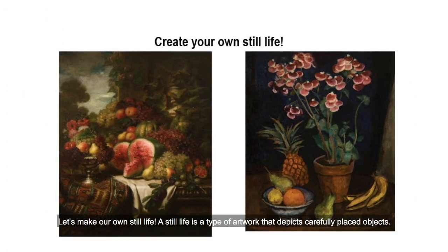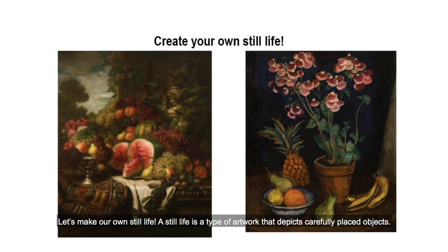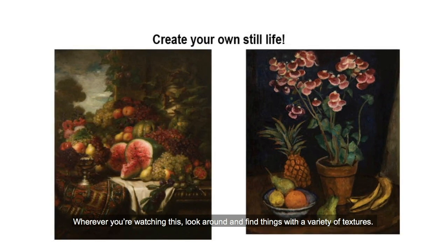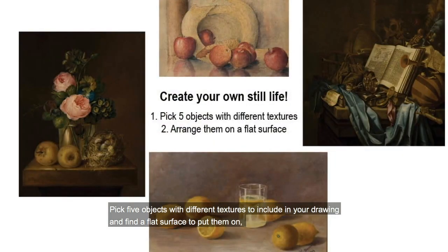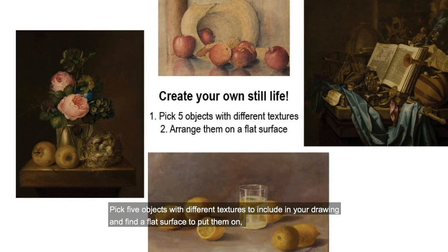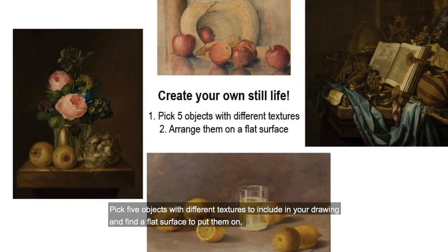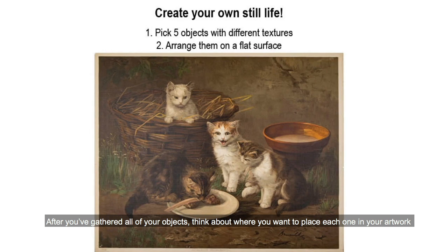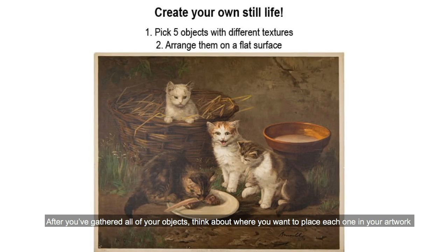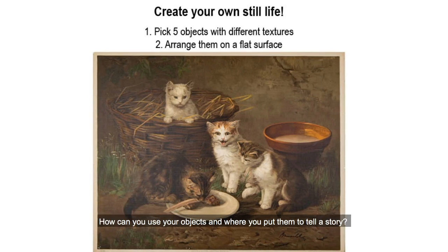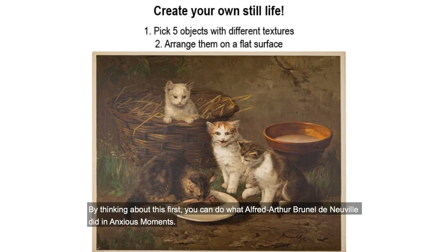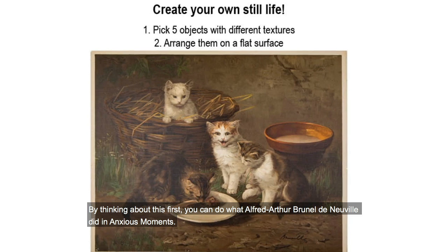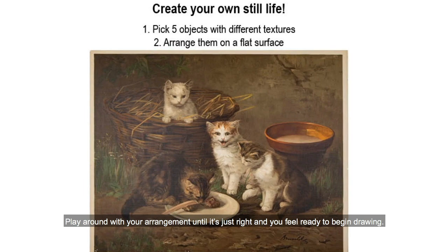Let's make our own still life. A still life is a type of artwork that depicts carefully placed objects. You can make one with whatever you have around you. Wherever you're watching this, look around and find things with a variety of textures. Pick five objects with different textures to include in your drawing and find a flat surface to put them on — this can be a table, chair, or even the floor. After you've gathered all of your objects, think about where you want to place each one in your artwork and what you want next to each other. How can you use your objects and where you put them to tell a story? By thinking about this first, you can do what Alfred Arthur Brunel de Neville did in Anxious Moments. Play around with your arrangement until it's just right and you feel ready to begin drawing.